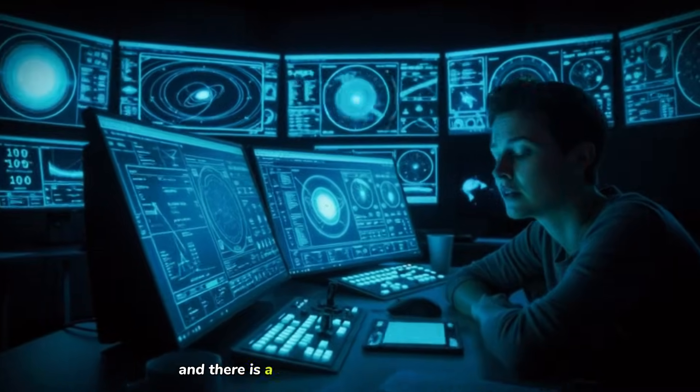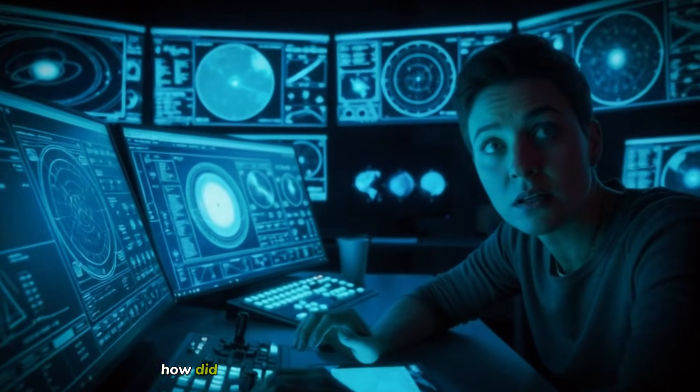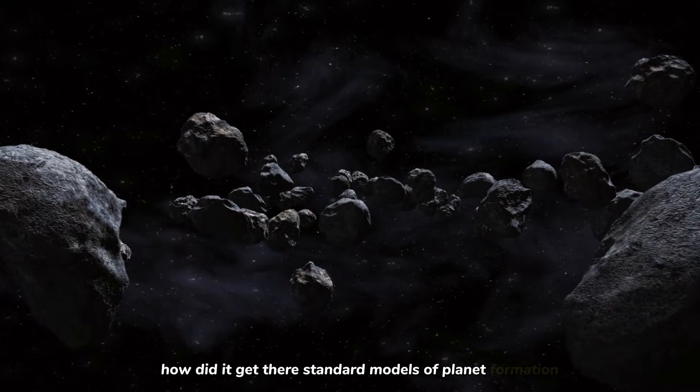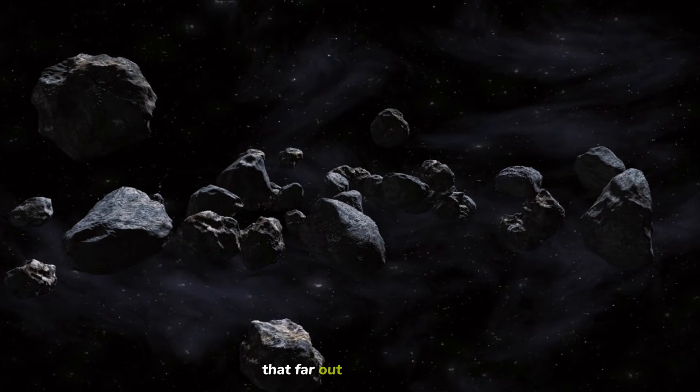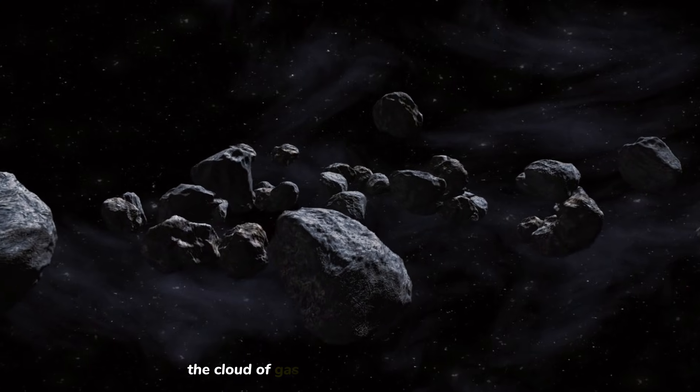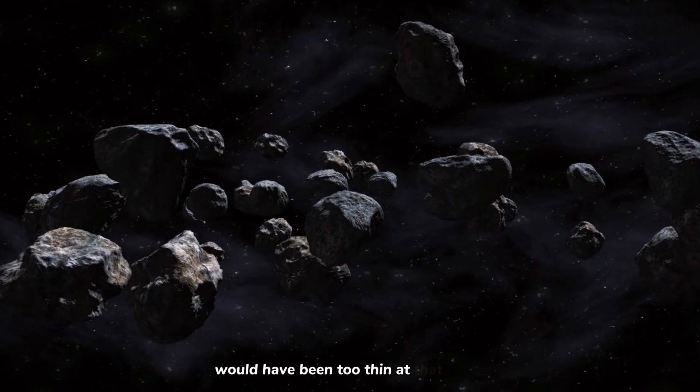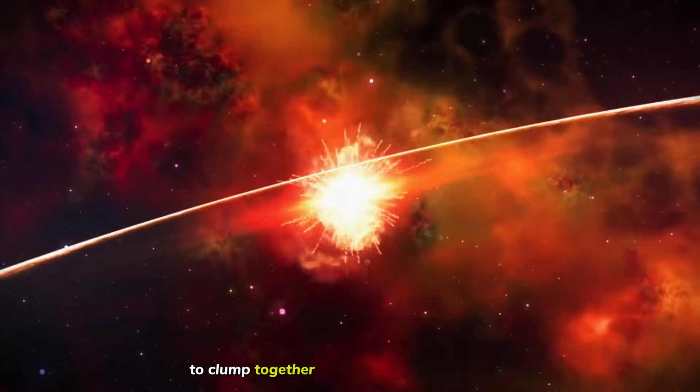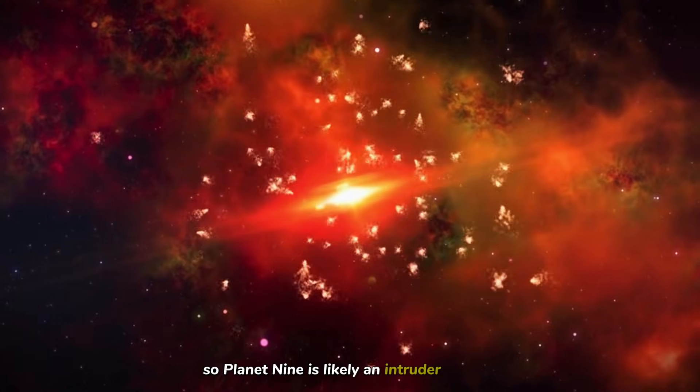If the math is right, and there is a super earth or mini Neptune out there, it begs a difficult question. How did it get there? Standard models of planet formation tell us that you can't build a planet that big, that far out. The solar nebula, the cloud of gas and dust that formed our system, would have been too thin at that distance to clump together into a world of this magnitude. So, Planet Nine is likely an intruder or an exile.